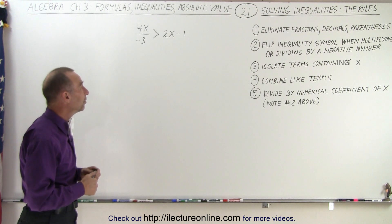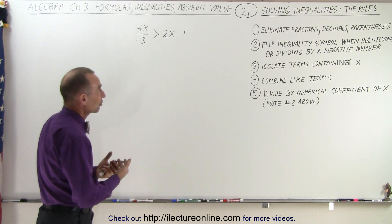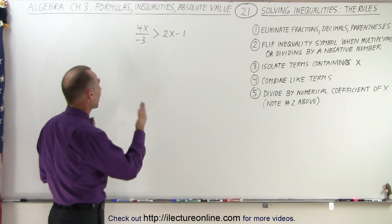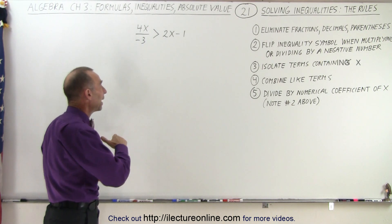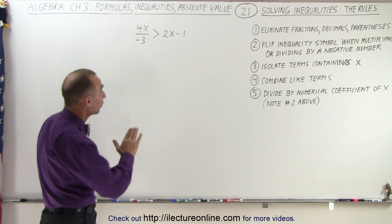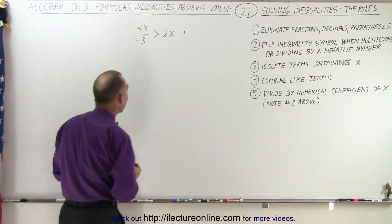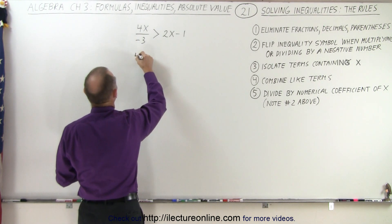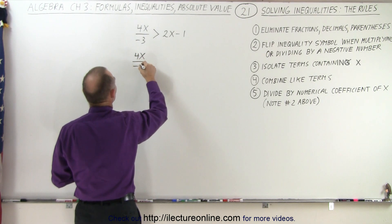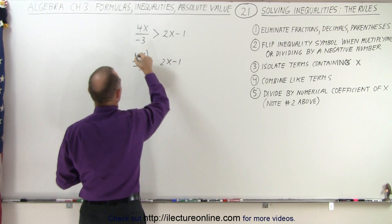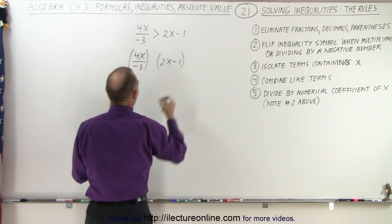So let's go ahead and take a look at this. We have a fraction. So rule number one says eliminate the fraction. We're going to multiply both sides of the inequality by negative three. Of course, since it's a negative number, we'll have to flip the inequality sign. And so what I like to do is rewrite that as 4x divided by negative three, 2x minus one. Let's put some parentheses around it.